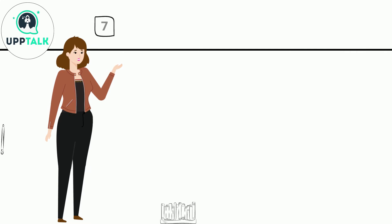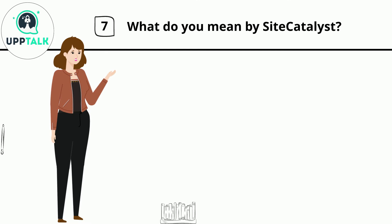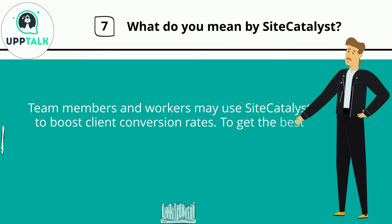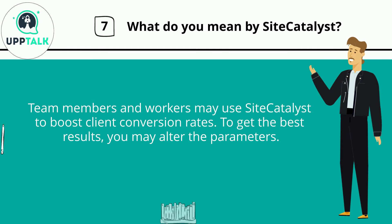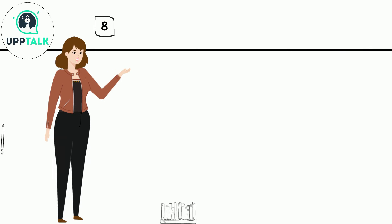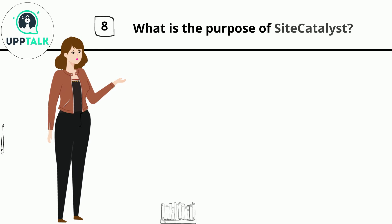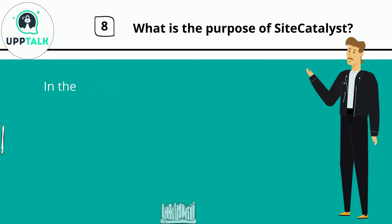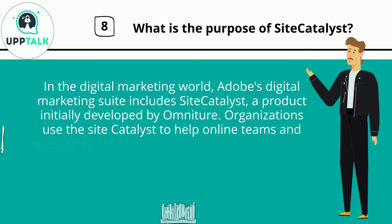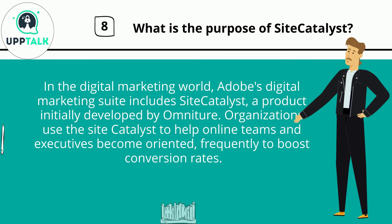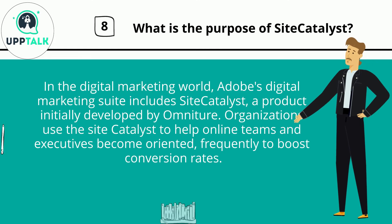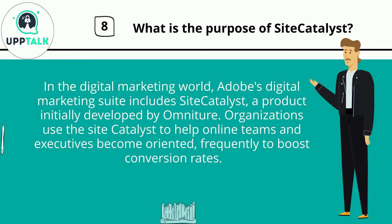Question 7: What do you mean by Site Catalyst? Team members and workers may use Site Catalyst to boost client conversion rates. To get the best results, you may alter the parameters. Question 8: What is the purpose of Site Catalyst? In the digital marketing world, Adobe's digital marketing suite includes Site Catalyst, a product initially developed by Omniture. Organizations use Site Catalyst to help online teams and executives become oriented, frequently to boost conversion rates.